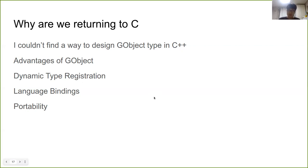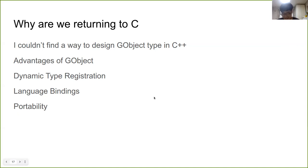Lastly, GObject is portable to many platforms more than C++, because C compatibility is much broader, especially when it comes to small devices. And GObject is written in C. Thus, we can easily produce the library for many kinds of target devices, even for microcontrollers.